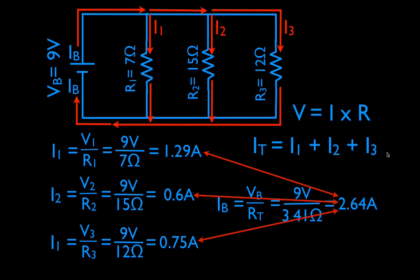That's all there is to it: use the equations, know the current rule, and have a good conceptual understanding of how it works. I like to label everything with subscripts — ones, twos, threes, totals, and B's — to keep track of which currents, voltages, and resistances I'm using. I hope you found that helpful; if so, give me a thumbs up or leave a comment below.